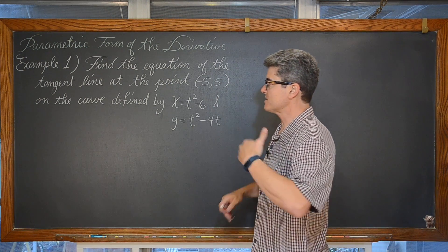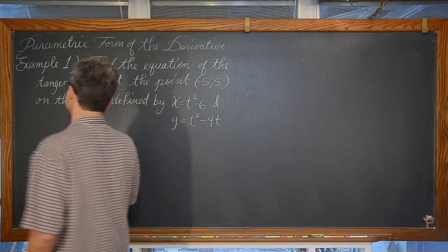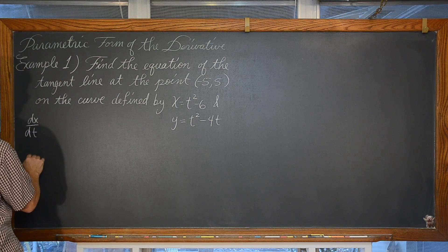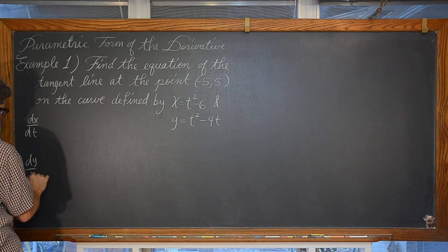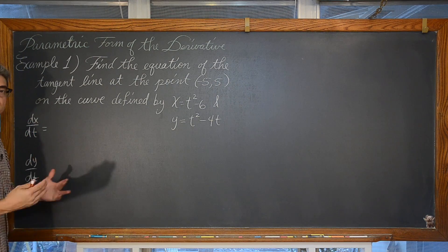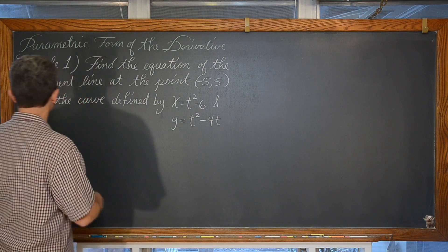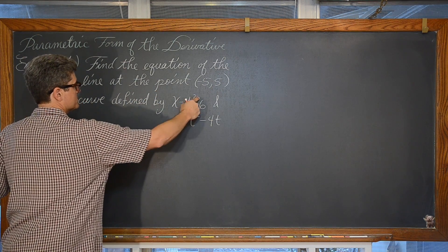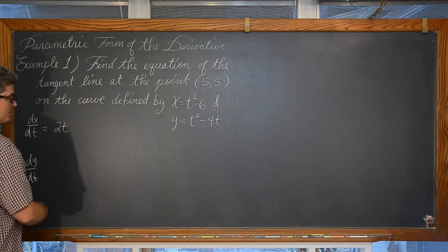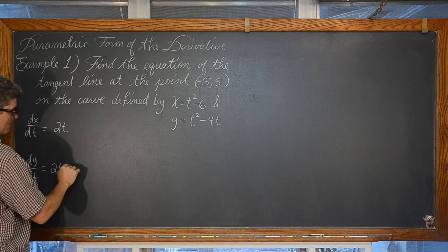Keeping this in the form of parametric equations, we are going to find dx/dt and dy/dt and then put dy/dt over dx/dt to get dy/dx — the derivative of y with respect to x. For dx/dt, we bring the two down and reduce the power by one, giving us simply 2t. And for dy/dt, we get 2t minus 4.